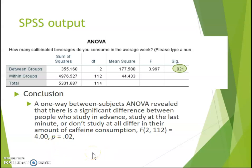You should never report a p-value of zero. Even if your Sig column shows 0.000, you would write p < 0.001 instead. This is because there's never a situation where you have a zero probability of an outcome — even if it's very small, the probability is still not zero.